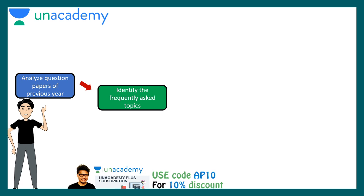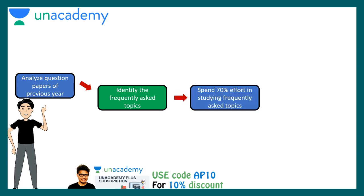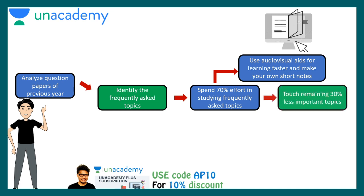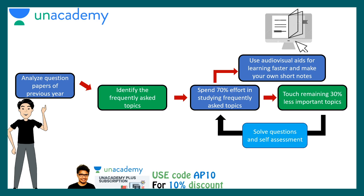Overall, you need to analyze question papers and identify frequently asked topics, then spend 70% of your effort solving those. Use audio-visual cues like Unacademy's platform. Forget about the remaining 30% for now — you can deal with that later. Always solve questions to judge how much you have learned. Don't learn blindly; your cycle should be learn, practice, learn, practice. You can also check my Unacademy course using code AP10 for a 10% discount.